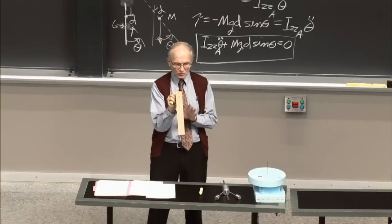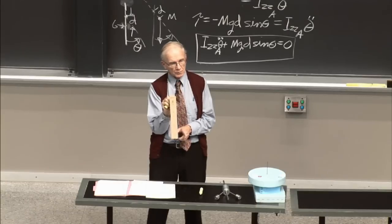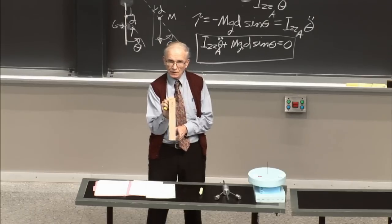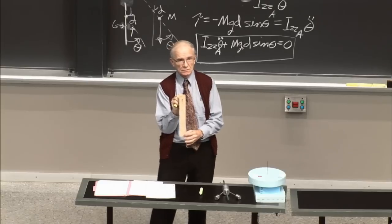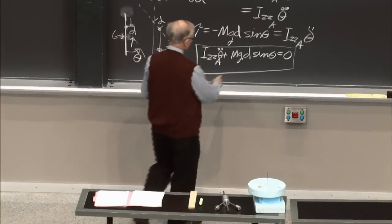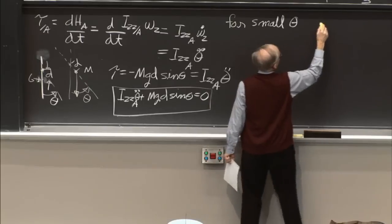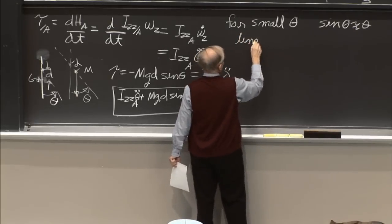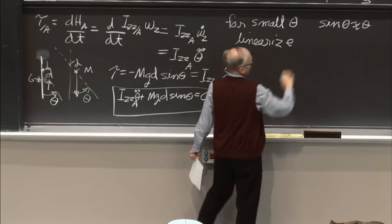For small theta, sine(theta) ≈ theta. So we linearize the equation. Theta = 0 is the static equilibrium position. Substituting, we get: I_zzA * theta_double_dot + MgD * theta = 0. That's the linearized equation of motion.